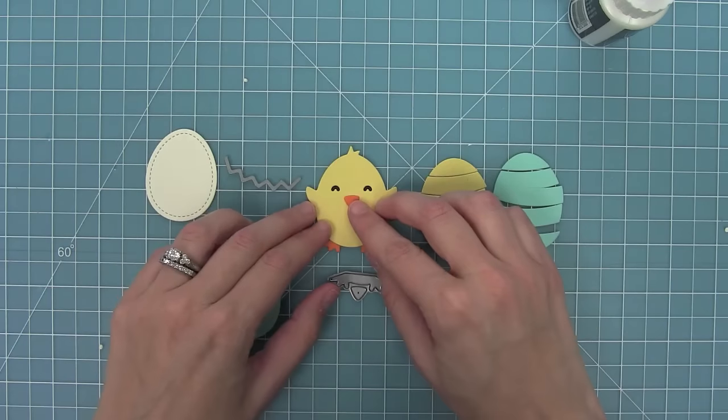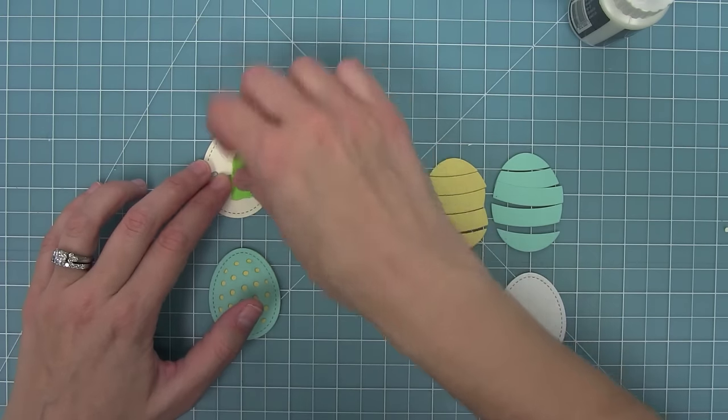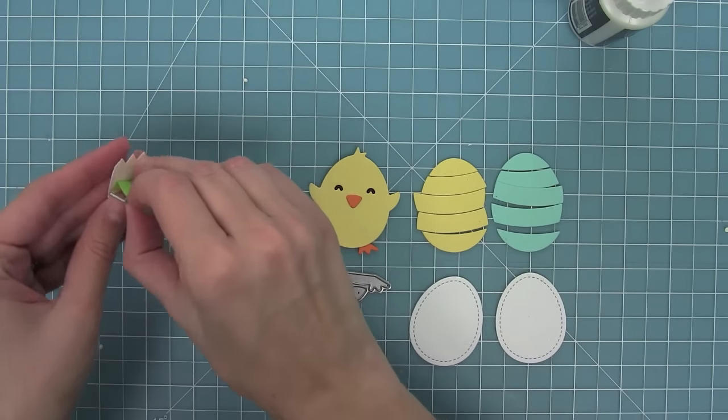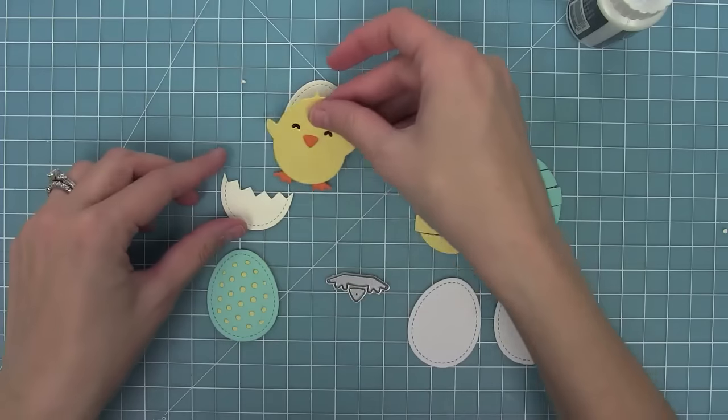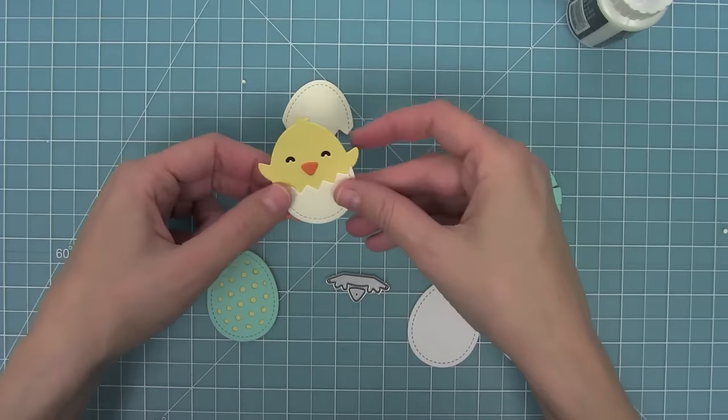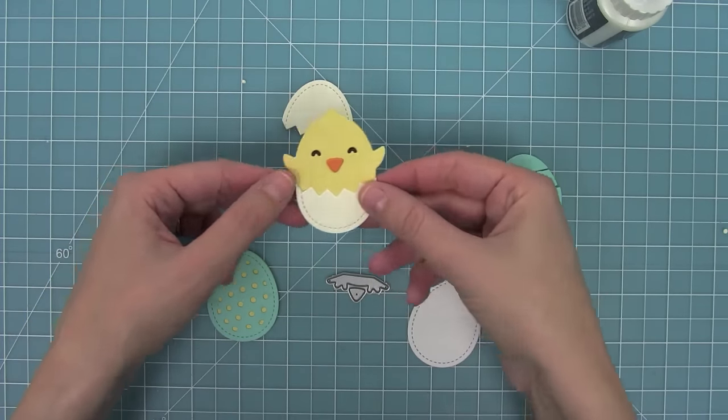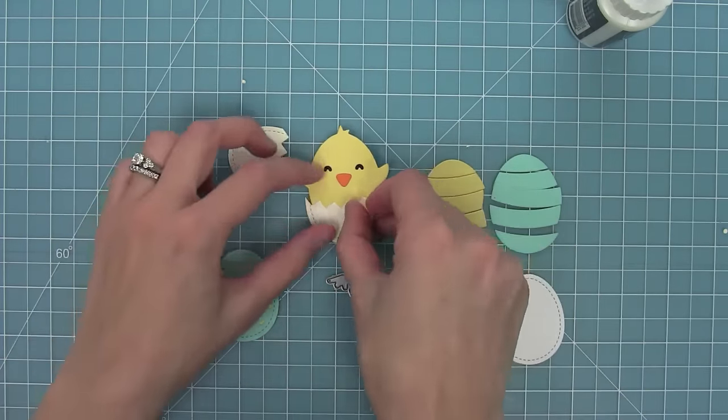Next up we have this little die piece that almost looks like a little chevron. This is actually used to crack the egg open so I lined it up on my egg, ran it through the die cut machine and now it looks like a little cracked egg. You can actually put the chick in the egg which I think is really cute for baby cards or just general spring cards, it's just adorable.